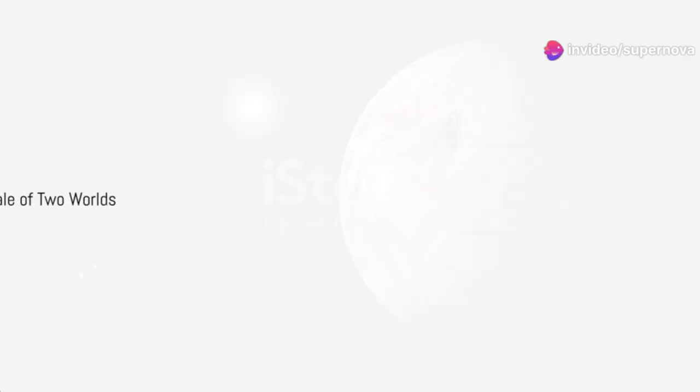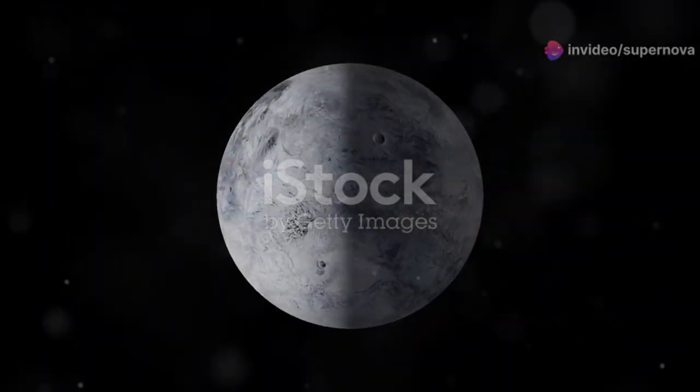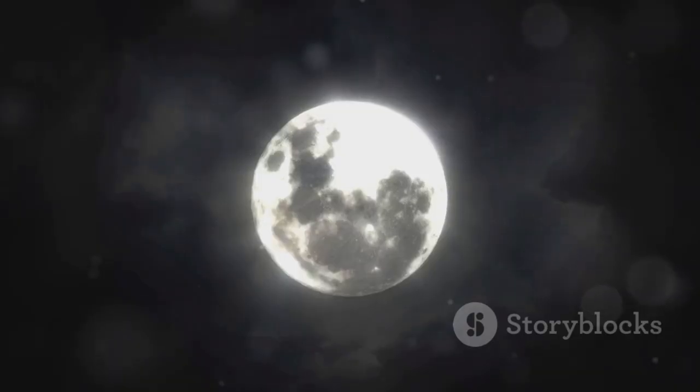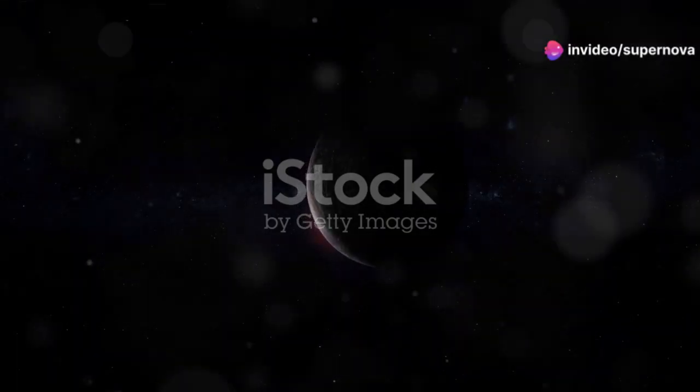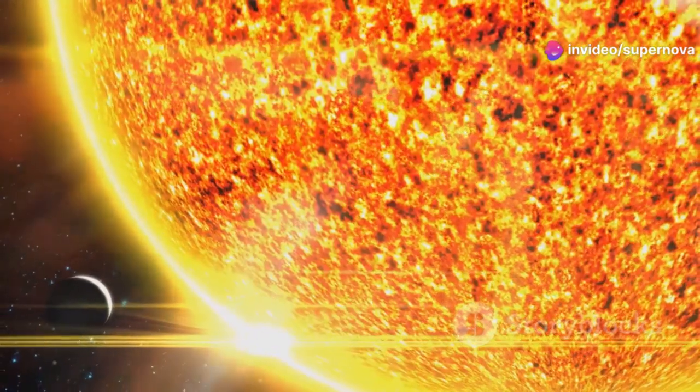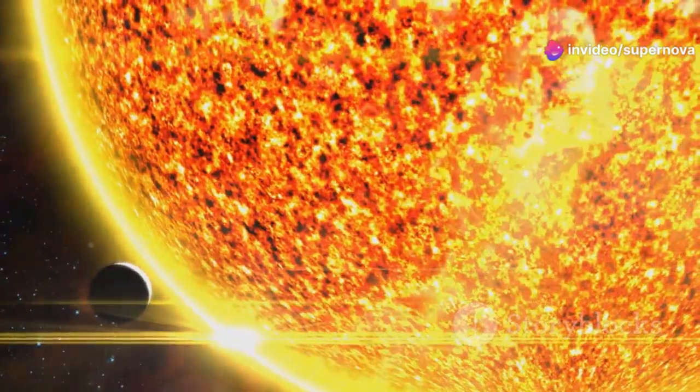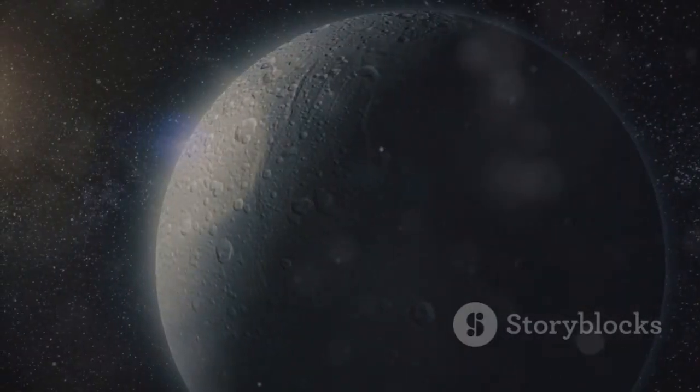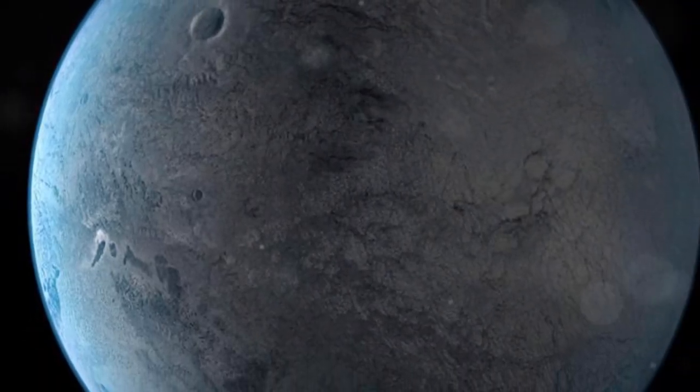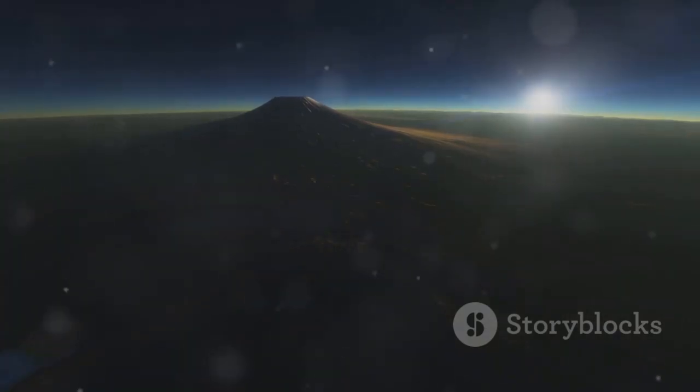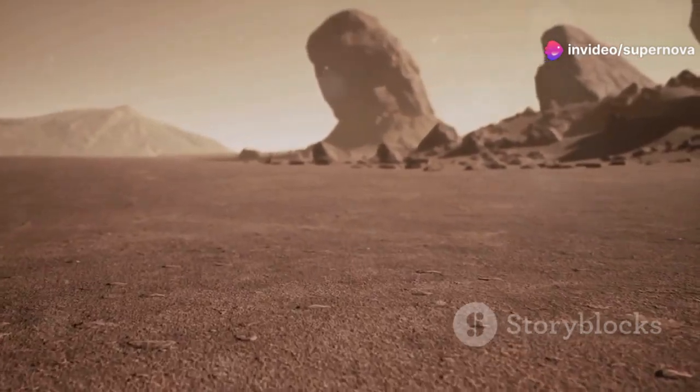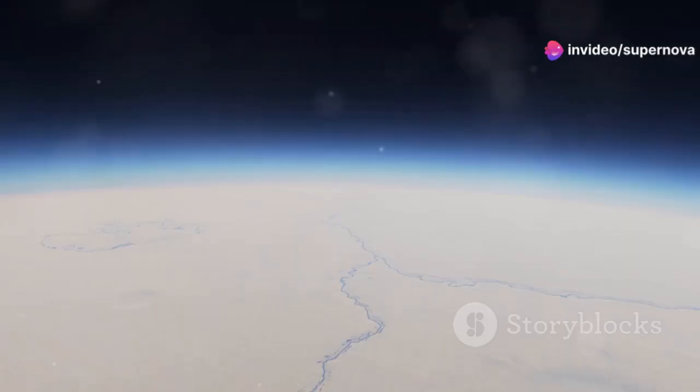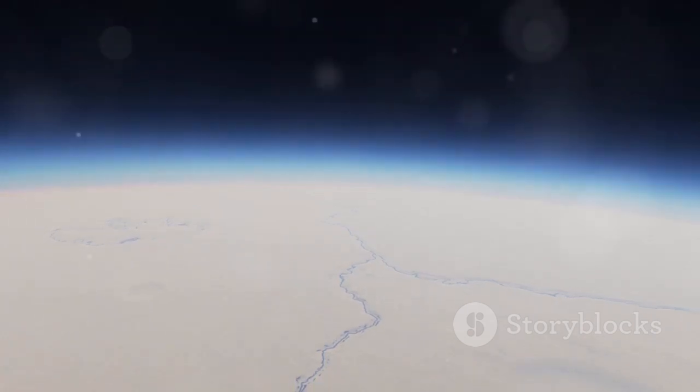Proxima b is tidally locked to its star. This means that one side of the planet always faces the star, just like how the same side of the moon always faces Earth. This tidal locking has some pretty dramatic consequences for Proxima b's climate. The side facing the star is in perpetual daylight, experiencing scorching temperatures. The opposite side is in eternal darkness, with temperatures plummeting to frigid lows. This stark contrast creates extreme conditions. Imagine a world with one side a scorching desert and the other a frozen wasteland.